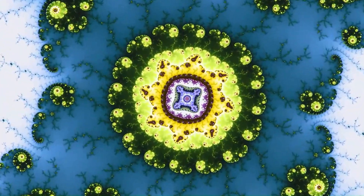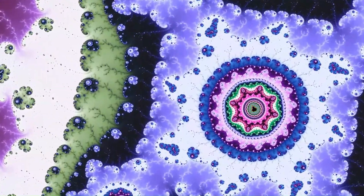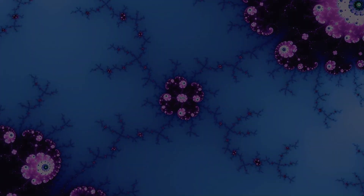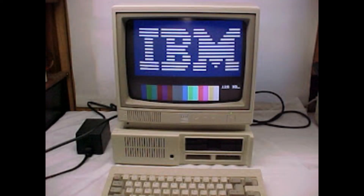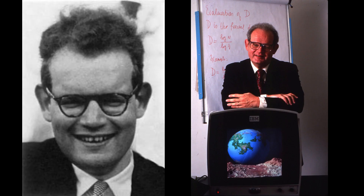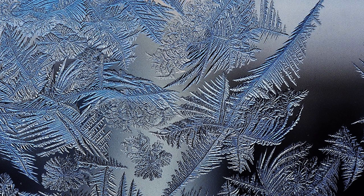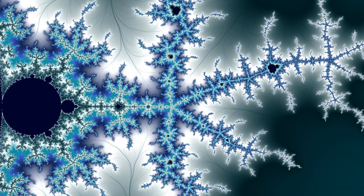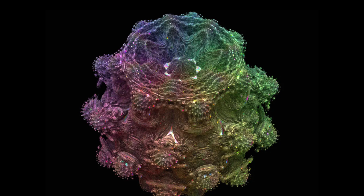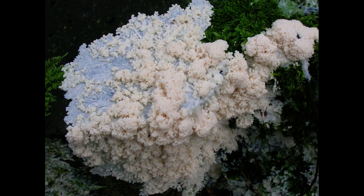And guess what you would never expect? All this beauty can be derived from a simple mathematical equation, which even a high school student can handle. The beginning was in 1980 at IBM. A genius mathematician called Benoit Mandelbrot ignited all this geometrical revolution. Mandelbrot was a Polish-born French-American with interest in the practical sciences, especially regarding what he labeled as the art of roughness. He is recognized for his contribution to the field of fractal geometry, which includes coining the word fractal, as well as developing a theory of roughness and self-similarity in nature.